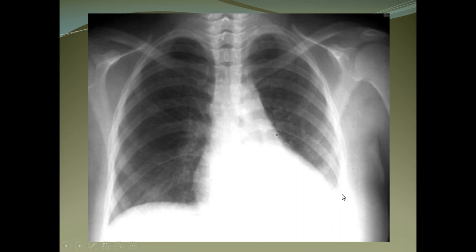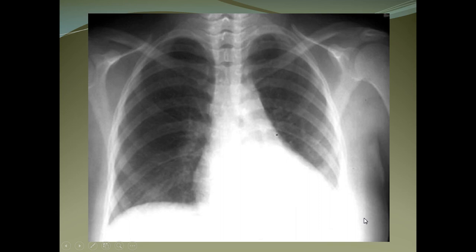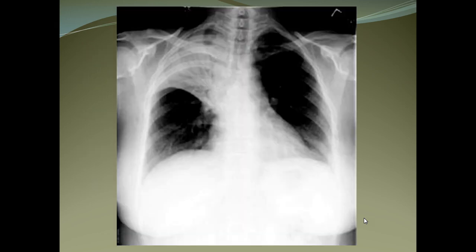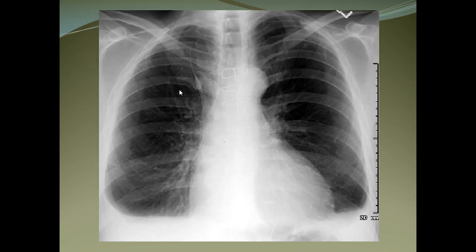In cardiomegaly, the heart is more than 50% of the thoracic cavity width (cardiothoracic ratio), measured by drawing a line across the chest wall. There is also blunting of the left CP angle indicating pleural effusion on the left side. Pneumonias present as air-space opacities with lobar consolidation; interstitial opacities can be seen with air bronchogram. In collapse, the opposite lung tries to compensate and becomes hyperinflated.